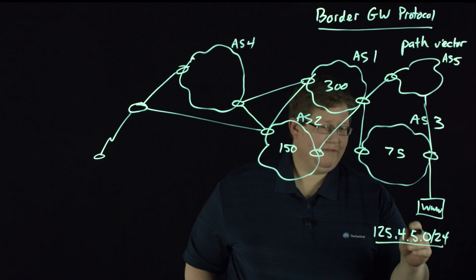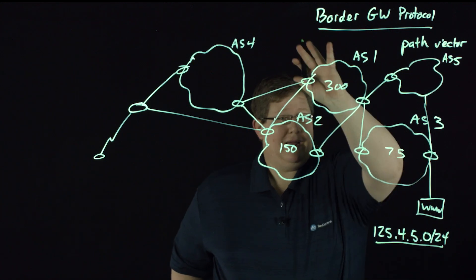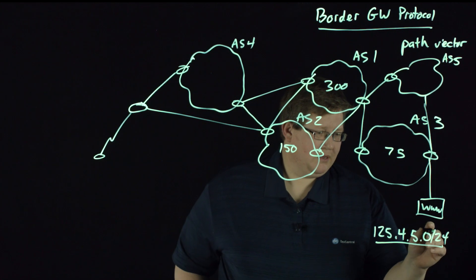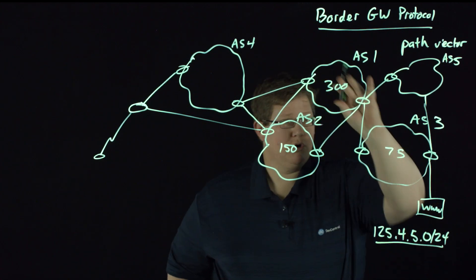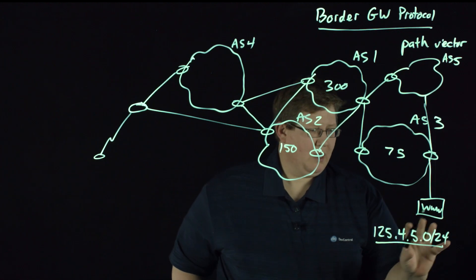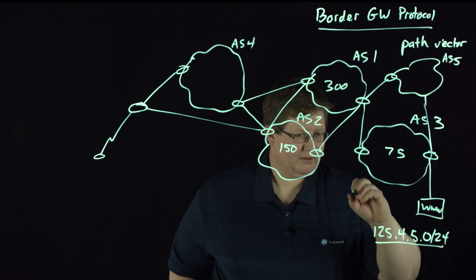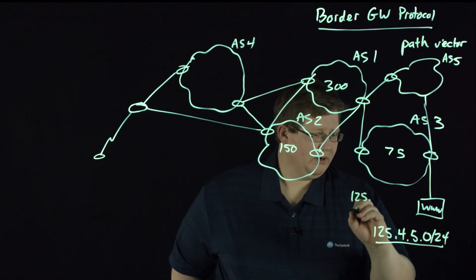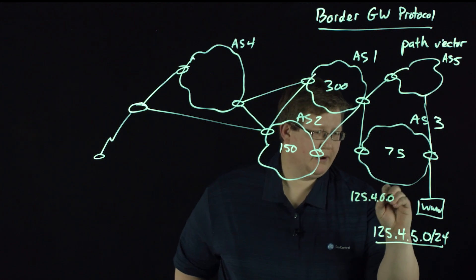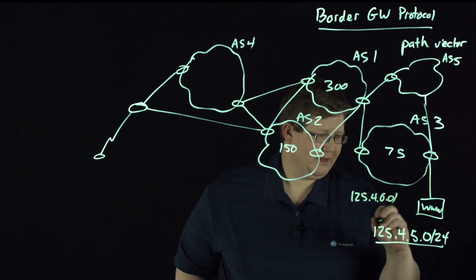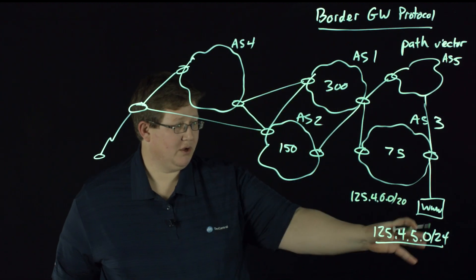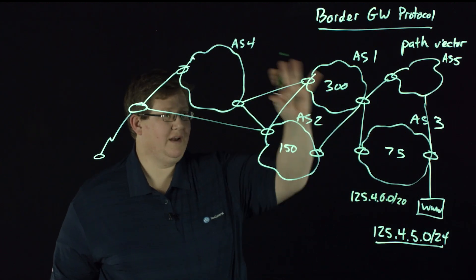But anyway, back to our example, this autonomous system will advertise this route out to the world. Now they may do that as a summary route. It might not go to the world outside of this autonomous system as a slash 24 that might be aggregated into say something like 125.4.0.0, like a slash 20 or something like that.